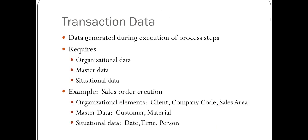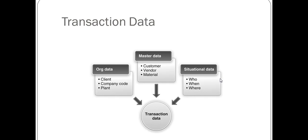Transaction data is the third type of data and is used during the execution of processes or steps. It requires organizational data, master data, and situational data. An example is a sales order creation. Transaction data can come from organizational level data, master data, or situational data.